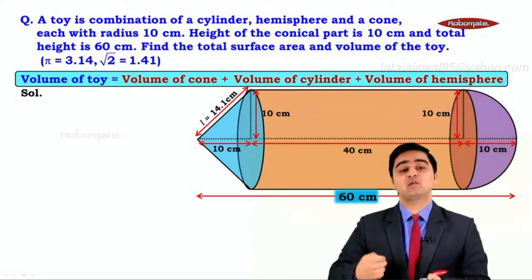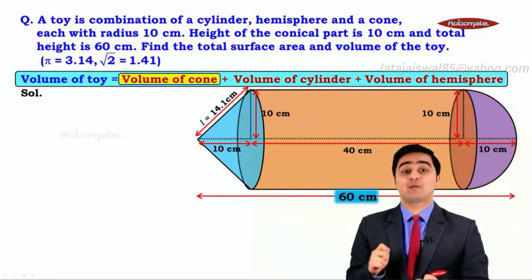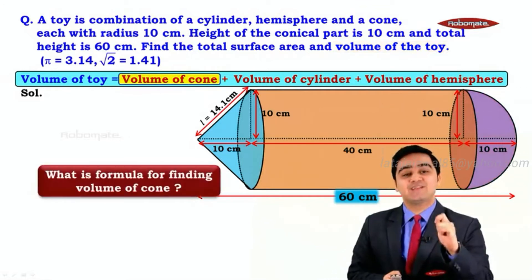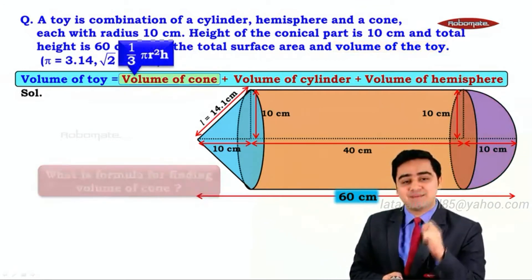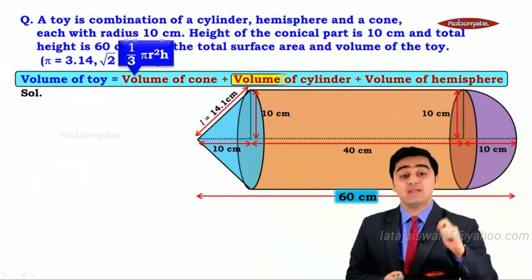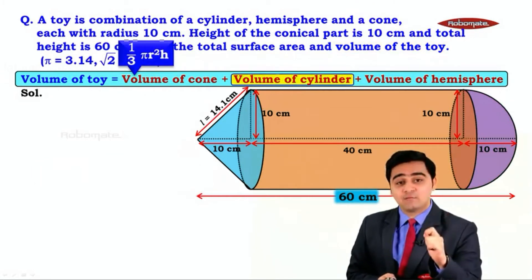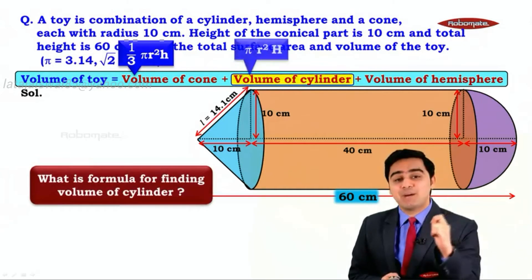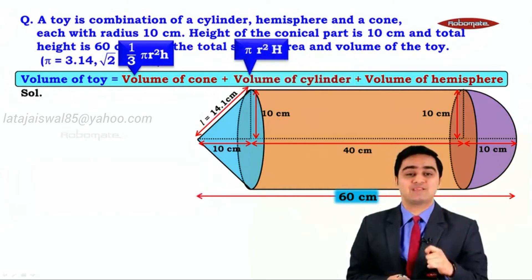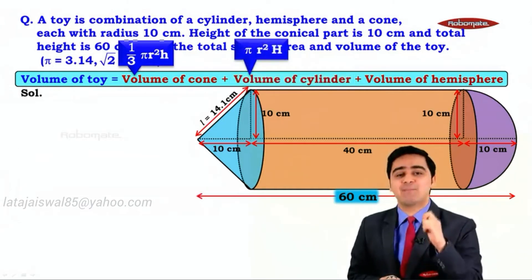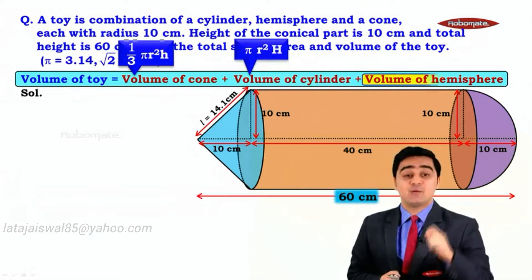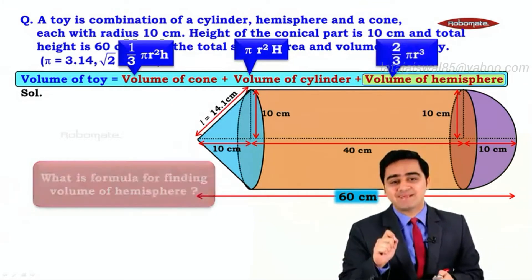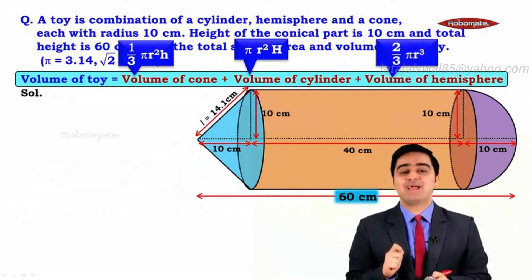Let us focus on getting the volume of the cone. The formula to find the volume of a cone is 1/3 π r² h. The formula to find the volume of a cylinder is π r² H (capital H). The formula to find the volume of a hemisphere is 2/3 π r³.